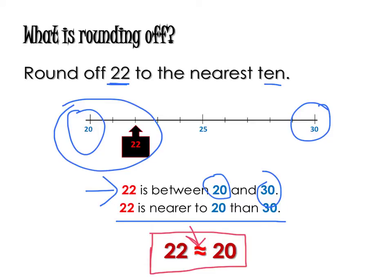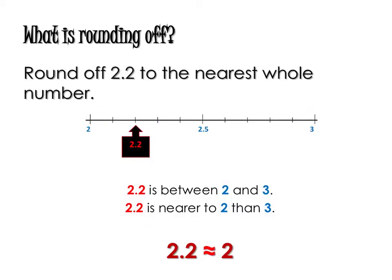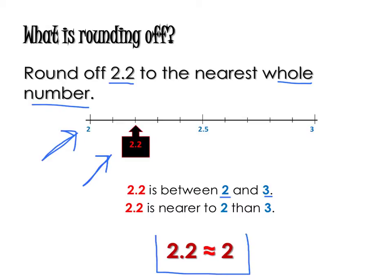This is exactly the same concept when it comes to decimals. So now let's take a look at this question: if I want you to round off 2.2 to the nearest whole number. Whole numbers are 1, 2, 3, 4, 5. So 2.2 is somewhere between 2 and 3. If we look at this number line, 2.2 is here — it is actually nearer to 2 as compared to 3. Therefore, 2.2 is approximately equal to 2.